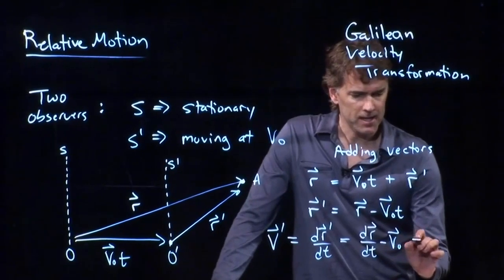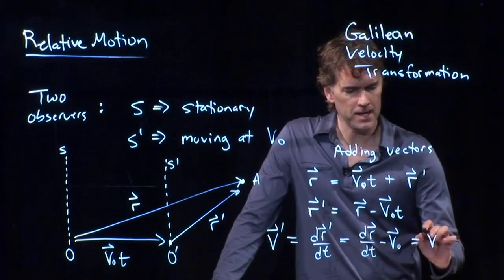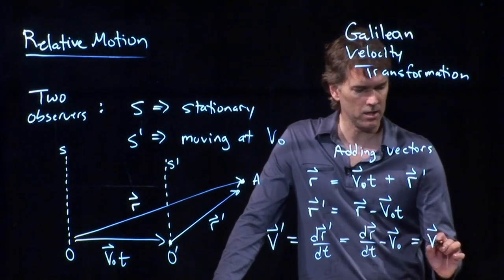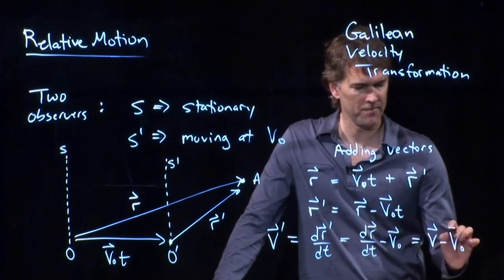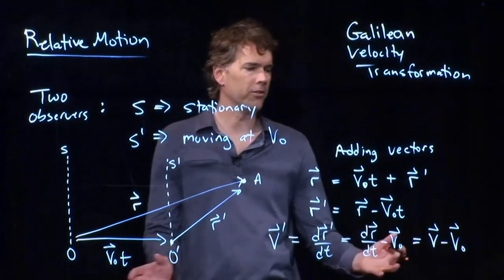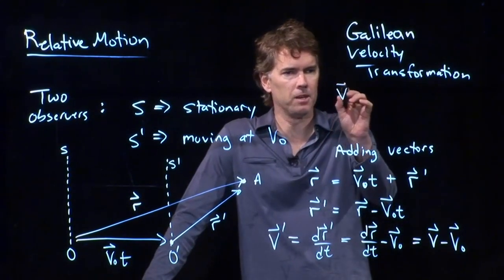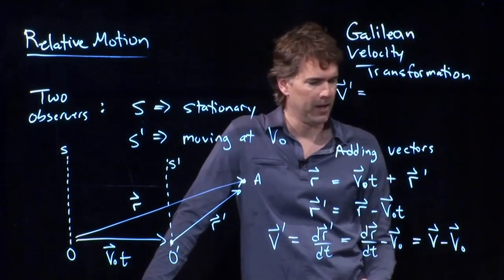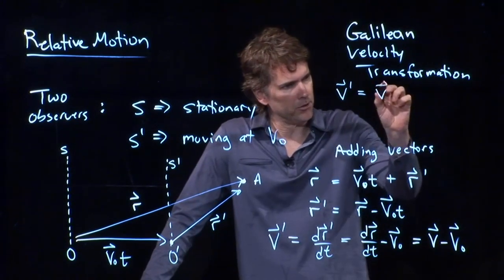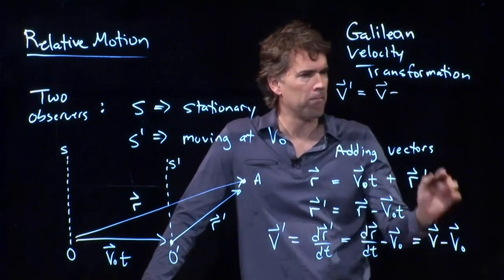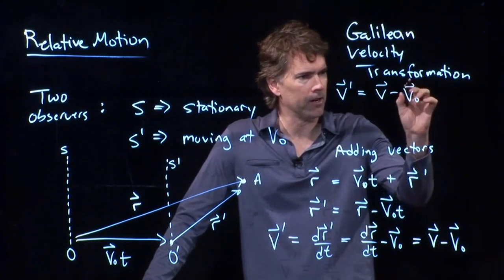But DR DT is just the speed observed in the stationary frame. And so this is the Galilean velocity transformation. What is the velocity observed in the moving frame? It is the velocity observed in the stationary frame minus the velocity of the moving frame.